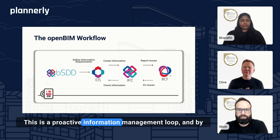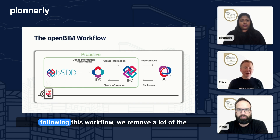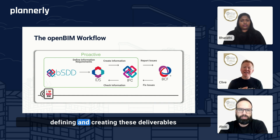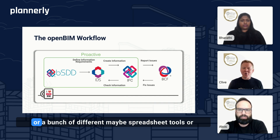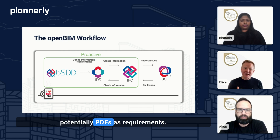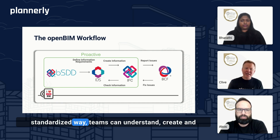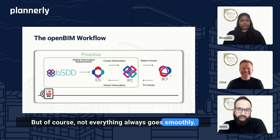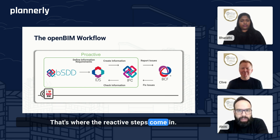It makes sure that everything can be aligned and works perfectly together. This is a proactive information management loop. And by following this workflow, we remove a lot of the inefficiencies and waste that is often caused when defining and creating deliverables using tools like Excel, spreadsheets, or PDFs as requirements. If we're creating it in a much more standardized way, teams can understand, create, and check these deliverables more clearly. But of course, not everything always goes smoothly — that's where the reactive steps come in.